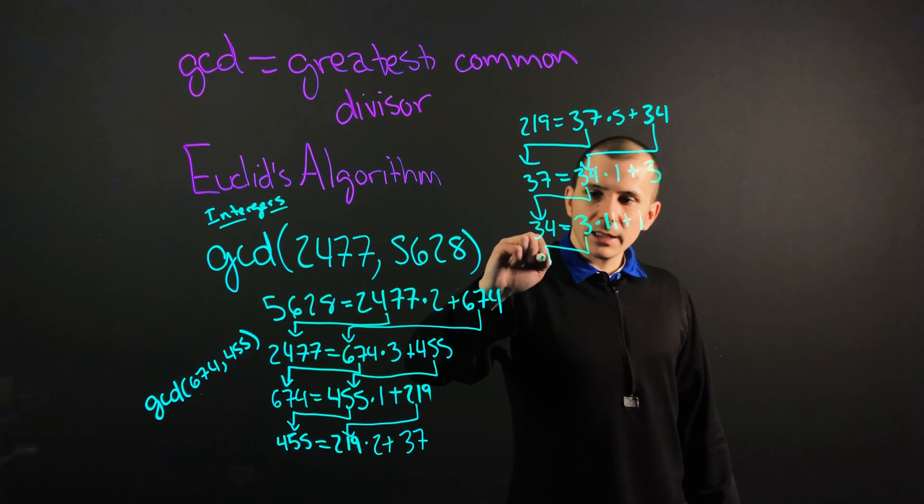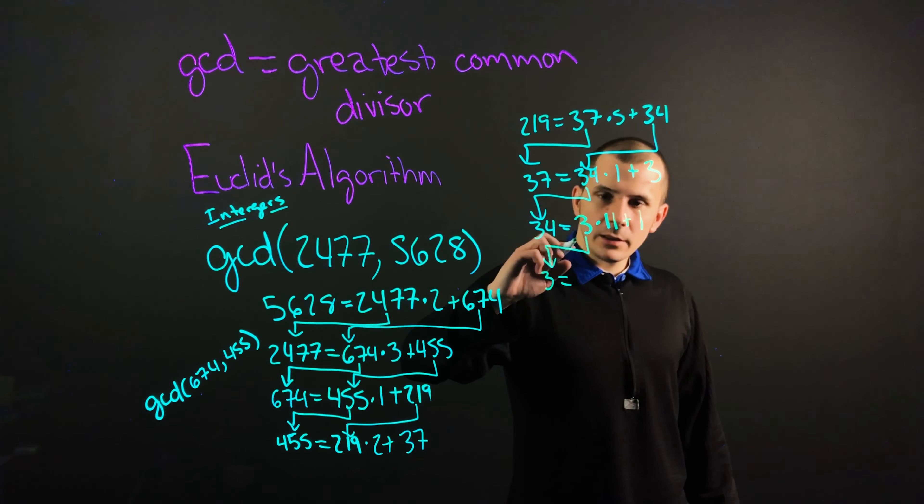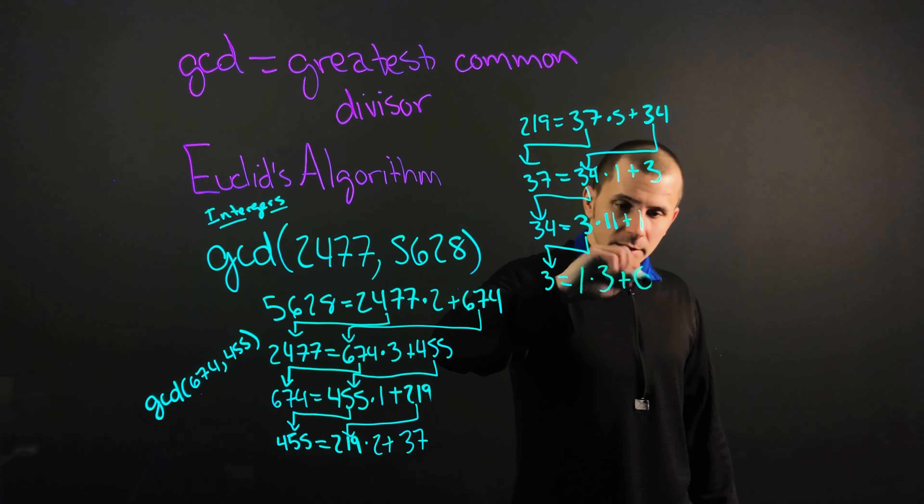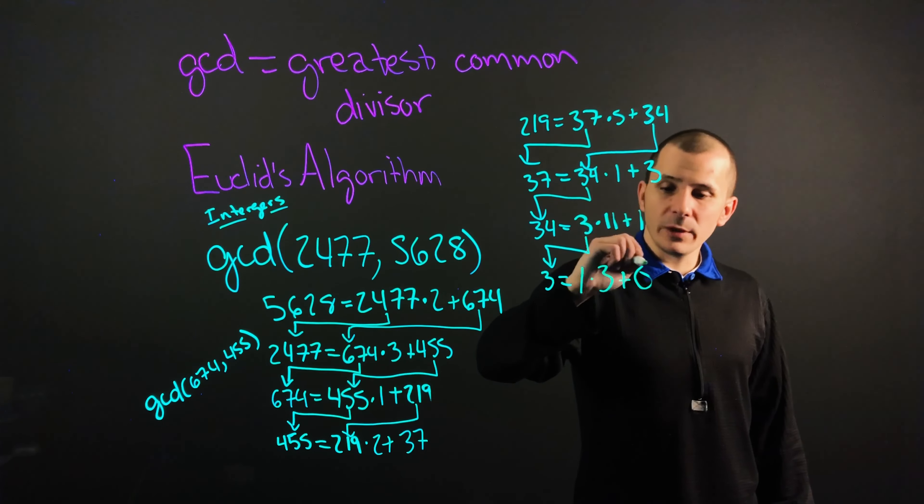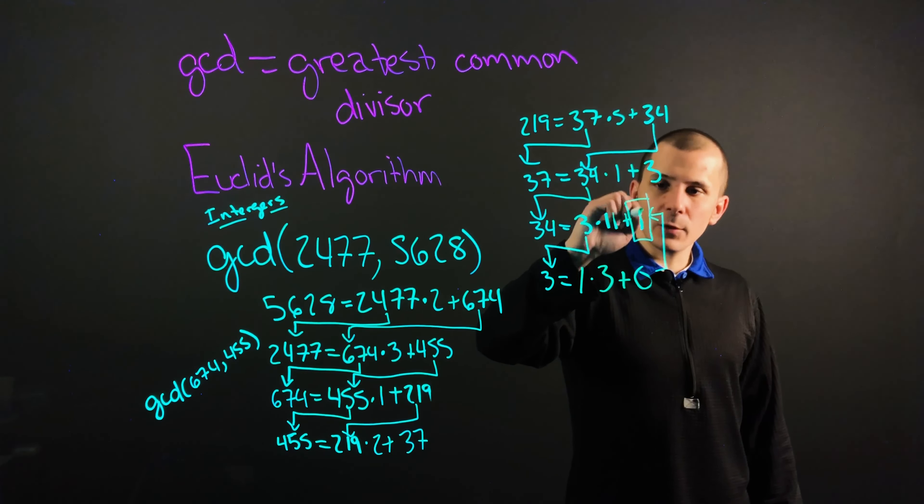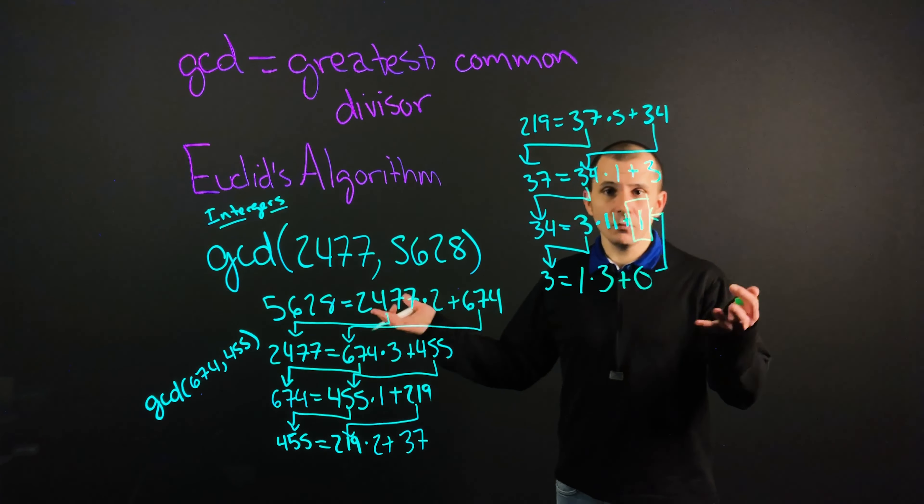We'll do this one last time. So we have 3 equals 1 times by 3 plus 0. To find out our answer, all we need to do is go up one here, and our greatest common divisor is 1.